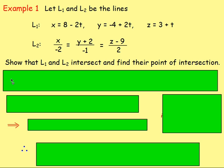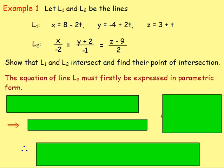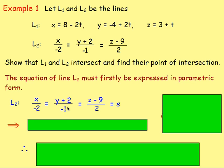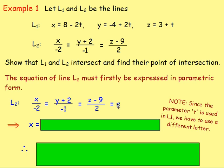It's easy to find the point of intersection when both lines are expressed in parametric form. Line 1 is already in parametric form, so we need to express line 2 in parametric form as well. We set x/(−2) = (y + 2)/(−1) = (z − 9)/2 = s. We use a different parameter letter s because t is already the parameter for line 1.